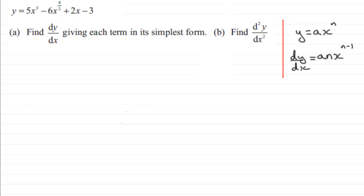The first three terms are of this format. So for part a, when it comes to differentiating this, I'm just going to copy the question out again. We've got y equals 5x cubed minus 6x to the power 4 thirds plus 2x minus 3.